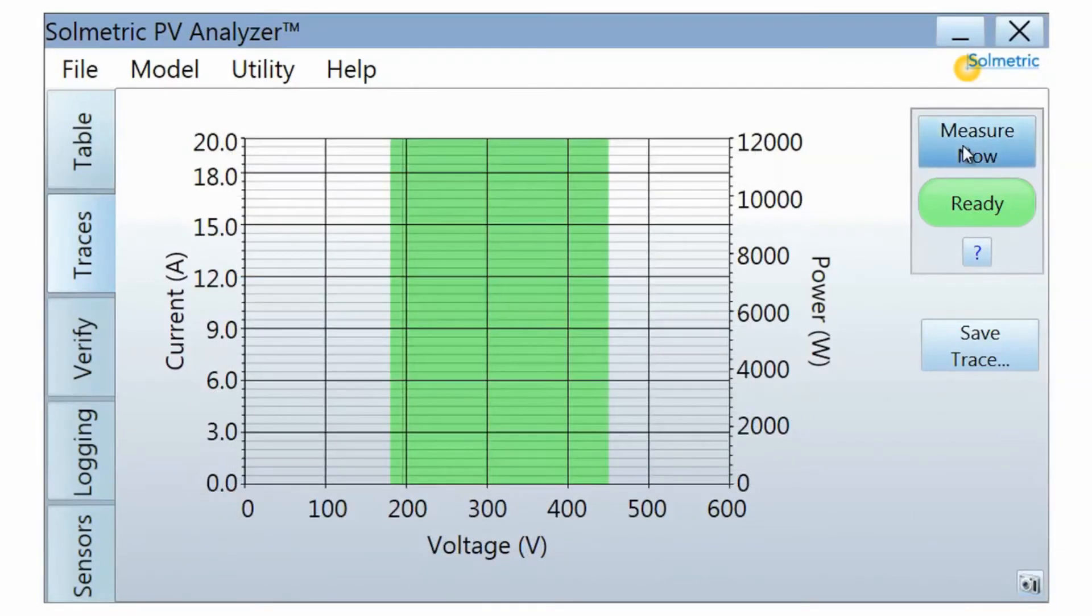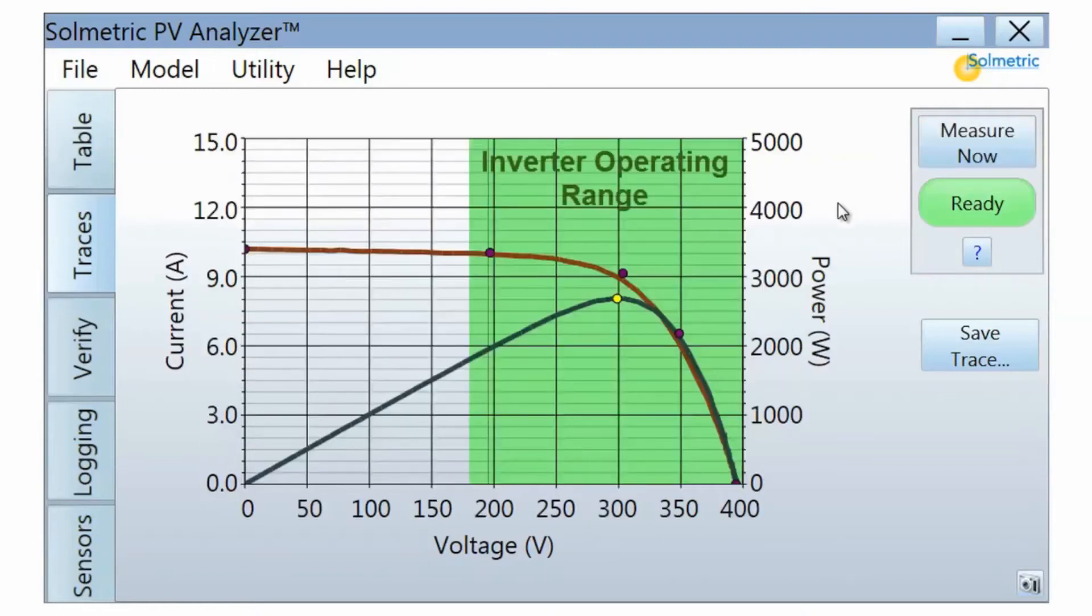The green shaded region indicates the inverter operating range. If the maximum power point is too close to one side of this region, there could be tracking problems at extreme temperatures or as the system ages.